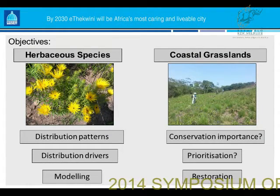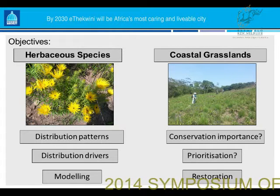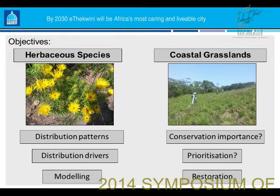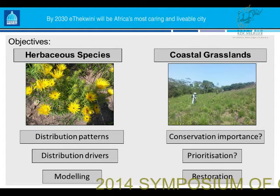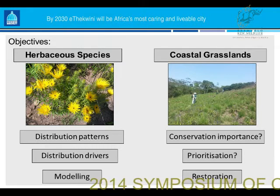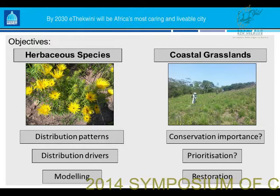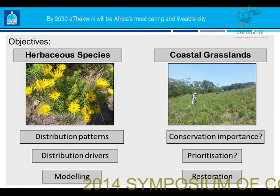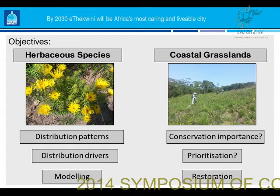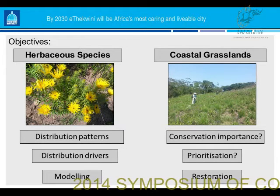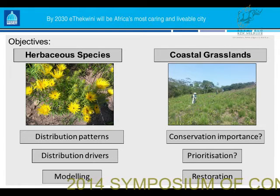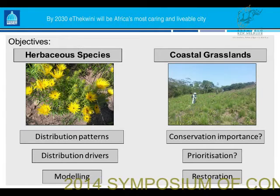Fifteen minutes is probably not enough time to cover everything, but broadly my objectives were around the herbaceous species — the forbs — and the coastal grasslands themselves. For the forbs, we looked at distributional patterns, the drivers of those patterns, and potential for modelling these species, given how little is known about them. For the grasslands, we looked at what species occur, how to prioritise them, and whether they retain conservation value. And given that we're not going to meet conservation targets, and grasslands are very difficult to restore, we looked at how we can make restoration a bit easier.